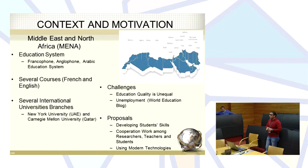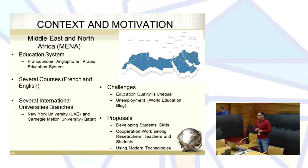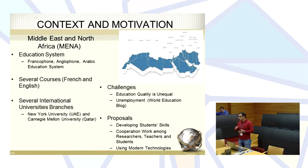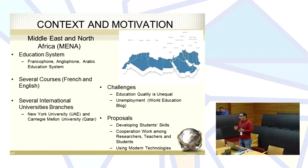Another issue is unemployment — there are many unemployed people, possibly because of the lack of quality in the education system. Many studies and reports propose ways to develop this education system: developing student skills, doing collaborative work among researchers, teachers and students, and allowing the use of modern technology that is available now.